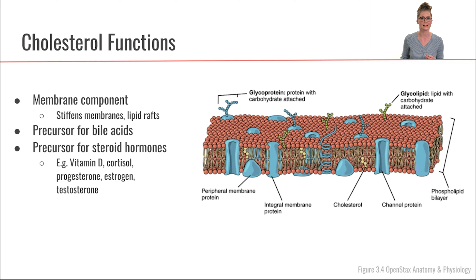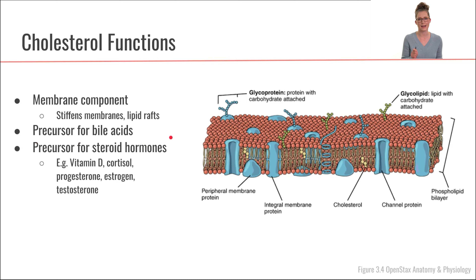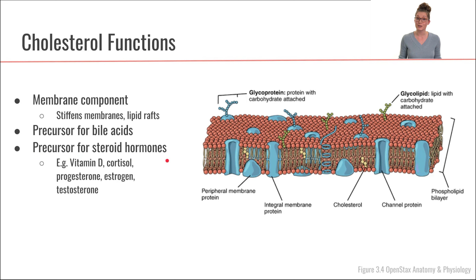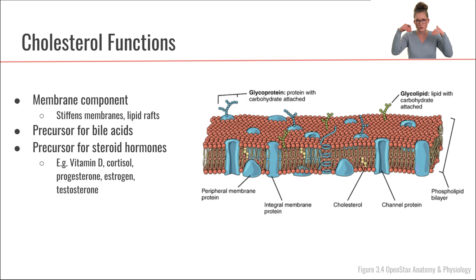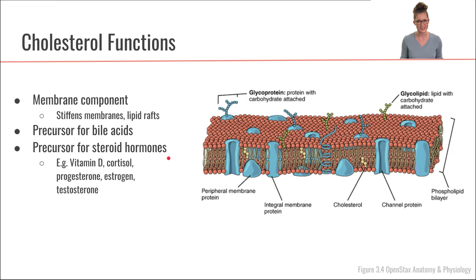Another important function of cholesterol is that it is a precursor for bile acids, which we'll discuss in more detail when talking about digestion and absorption of dietary fat. Excreting cholesterol as bile is really the only way we can get rid of cholesterol from our body. The third function of cholesterol is that it is a precursor for steroid hormones, including vitamin D, cortisol, and the sex hormones — estrogen, progesterone, and testosterone. These steroid hormones diffuse right into the nucleus of a cell and turn on gene expression.